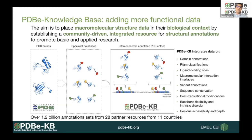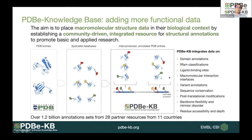In PDB-KB, the idea is similar to structure deposition in the PDB — annotations are deposited to the PDB Knowledge Base. We may find multiple annotations from different data resources for the same residues or the same protein. PDB-KB integrates both structures and associated annotations in one place so users can exploit the information. Right now, we have about 28 partner resources from 11 different countries, contributing about 1.2 billion residue-level annotations for structures in the PDB.